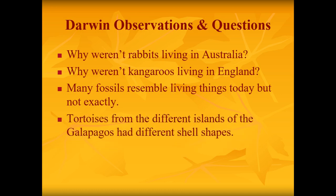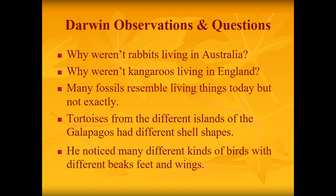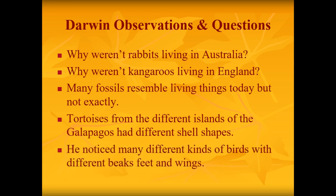Tortoises from the different islands of the Galapagos had different shell shapes — why wouldn't they all be the same shape? He also noticed many different kinds of birds with different beaks, feet, and wings.